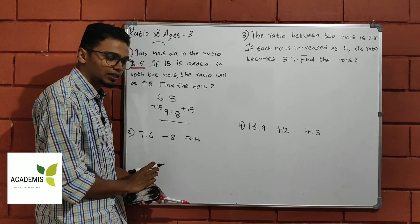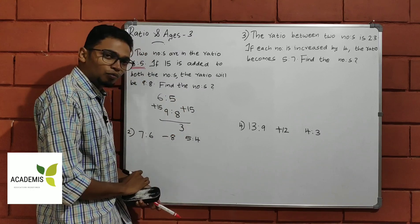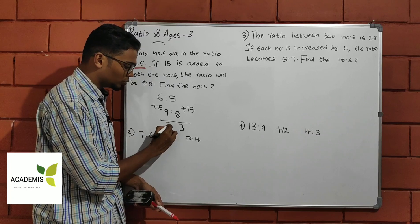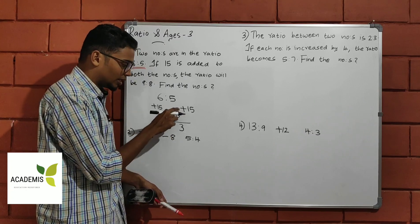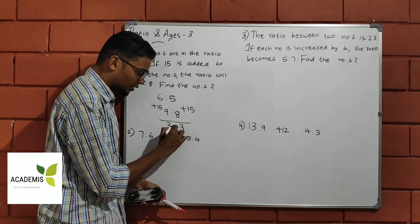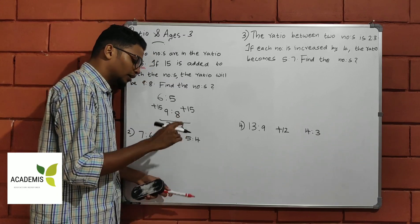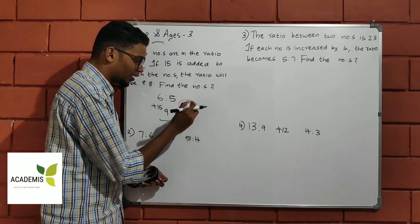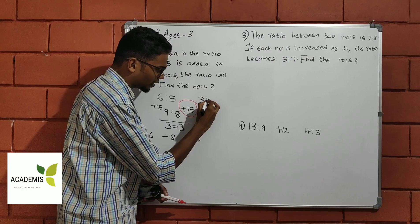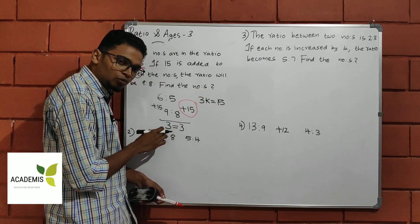Now, we look at the vertical difference. The difference between 5 and 8 is 3, and the difference between 6 and 9 is also 3. Since the differences are the same, we use the common factor approach. In the right side, 3 is equal to 15.